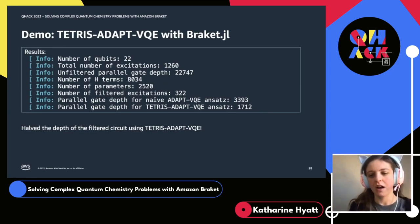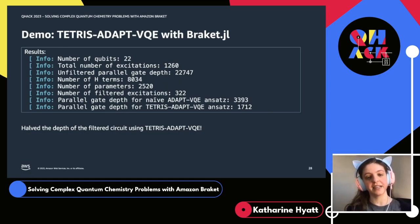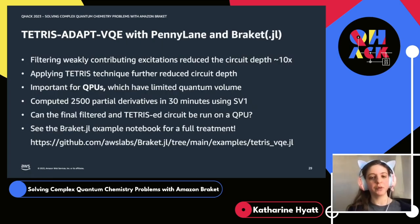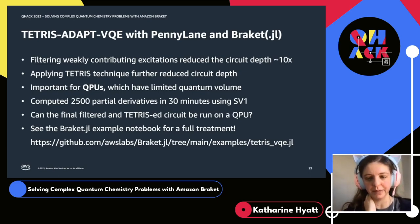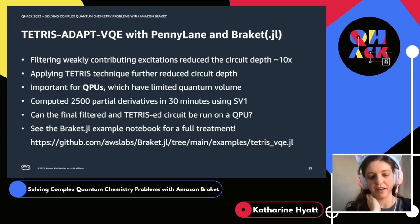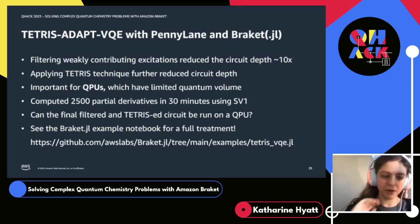There are also 8,000 terms in the Hamiltonian, and the initial number of parameters is 2,500. Once we apply the adaptive filtering procedure, we decrease the number of excitations by a factor of four. Then when we use the Tetris procedure versus the naive ADAPT procedure, we can lower the total parallel gate depth by another factor of two. One might say a parallel gate depth of 1,800 is still really big, but if one used the procedure of testing different active electron numbers, you may find that you're able to get away with far fewer qubits, which can lower the parallel gate depth from just over the line of infeasible into the feasible realm on real quantum hardware today. Using SV1, we're able to compute these 2,000-plus partial derivatives in 30 minutes or less, and we could run multiple executions in parallel to target the exact cutoff and number of electrons we need.